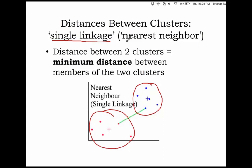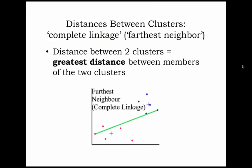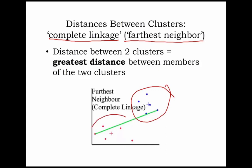With single linkage, you look at the nearest neighbor — you calculate all the distances between all pairs of data points, and wherever you have the least distance, that is the distance between two clusters. If it is complete linkage, then you look into the farthest neighbor. You have one cluster here and another cluster there; you look at the farthest members of these two clusters and calculate that distance.